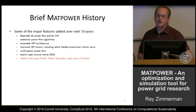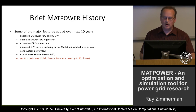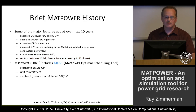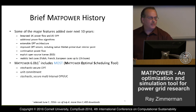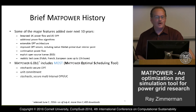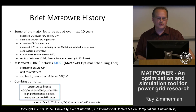One of the biggest improvements was the addition of realistic test cases donated by others, including the Polish system and some French and European systems, up to about 13,000 buses. Most recently, MAP Power 6 first beta version was released, which includes the MAP Power Optimal Scheduling tool. We've seen about 1,400 downloads of that since the 1st of June.